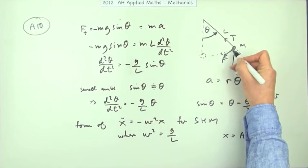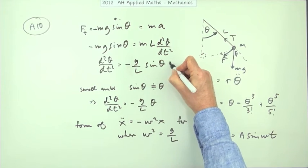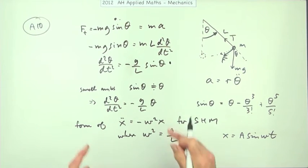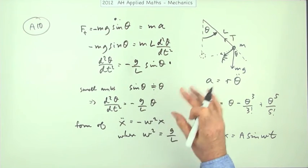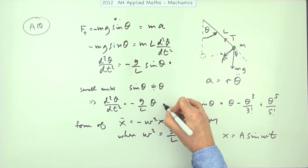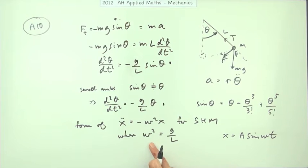So omega squared is equal to g over l. The first mark was just for getting that component, the second mark was for getting the equation with the sine, and the third mark was for making the statement that for small angles the sine of the angle is approximately the same as the angle when it's in radians, and so ending up with this one. And then if you go one step further and say that's the form of simple harmonic motion, that means omega squared, the angular velocity squared, should be g upon l.